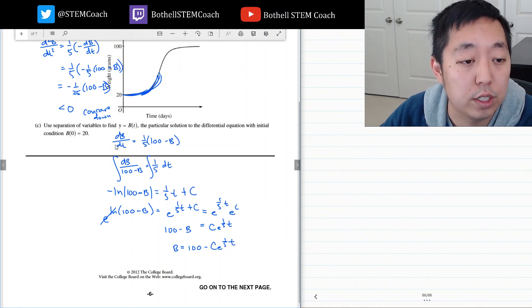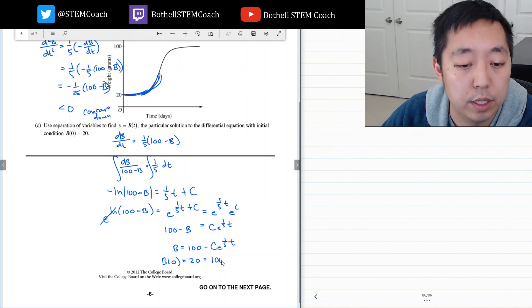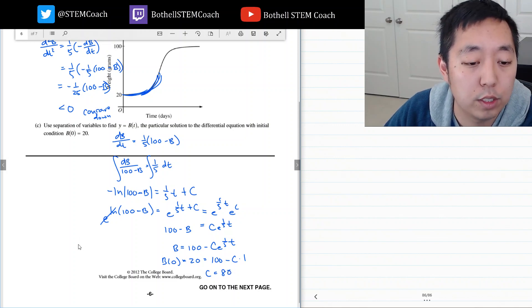So to solve for the constant I need to use the initial condition b of 0 equals 20. When I plug in 0 this is 1, so this becomes 100 minus c times 1, and so c then equals 80. So my overall solution is b equals 100 minus 80 e to the one-fifth t.